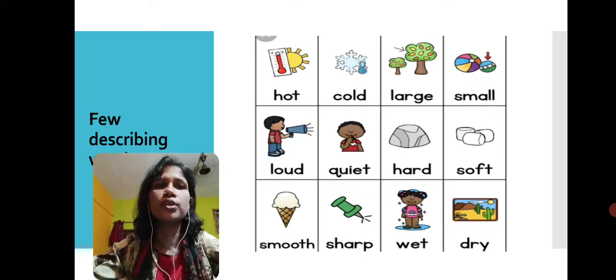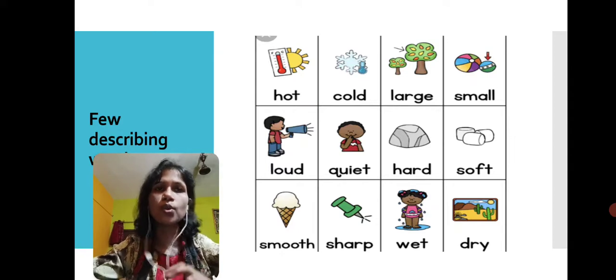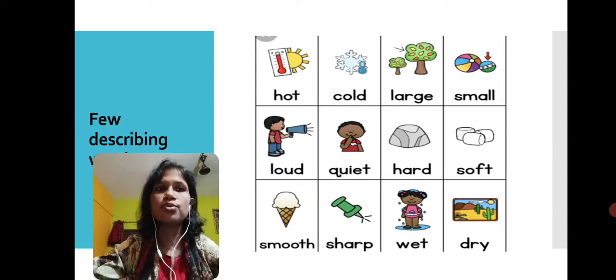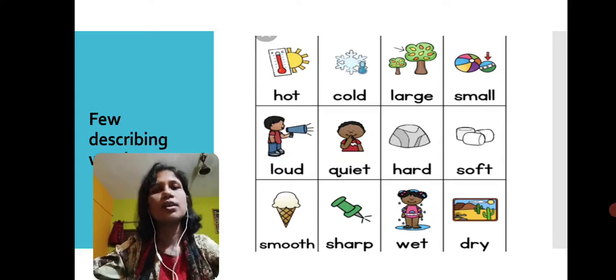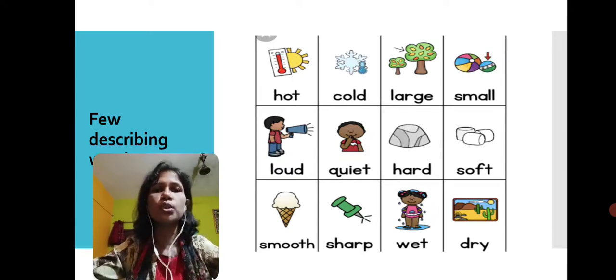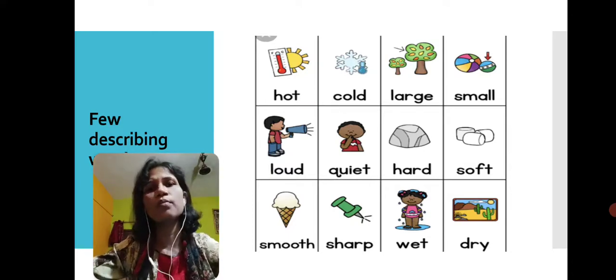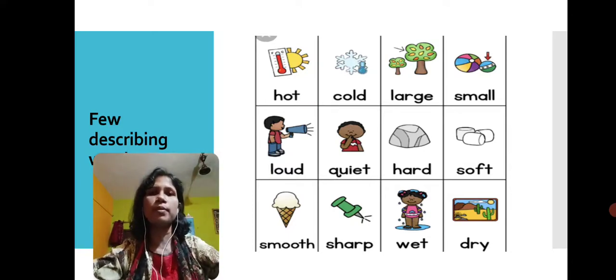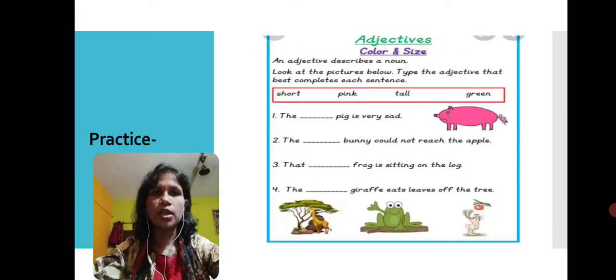Like hot, cold, large, small, loud, quiet, hard, soft, smooth, sharp, wet, dry. So these are some of the adjectives that have been mentioned in this slide, but we have more and more adjective describing words that we use. I hope you have understood.